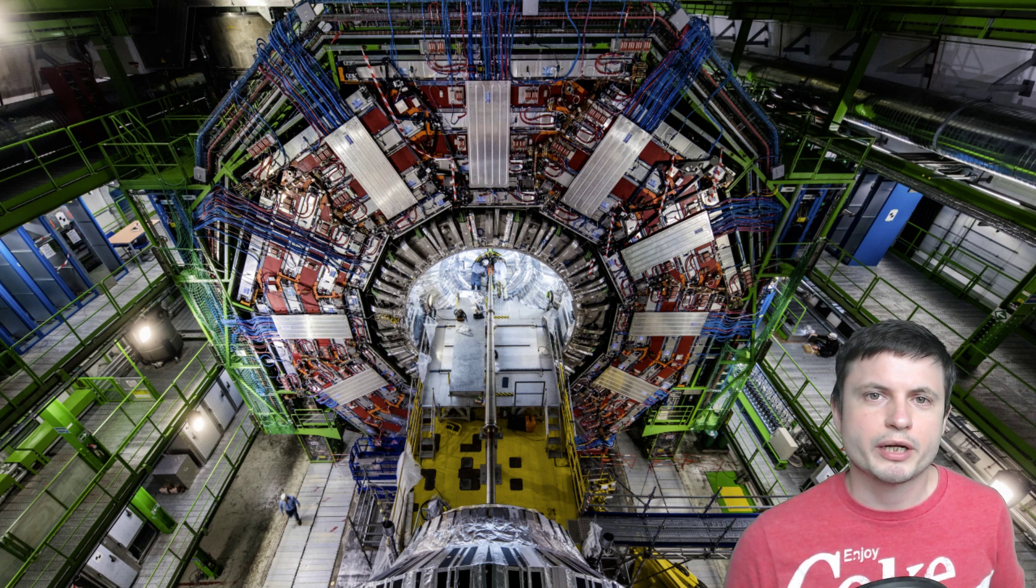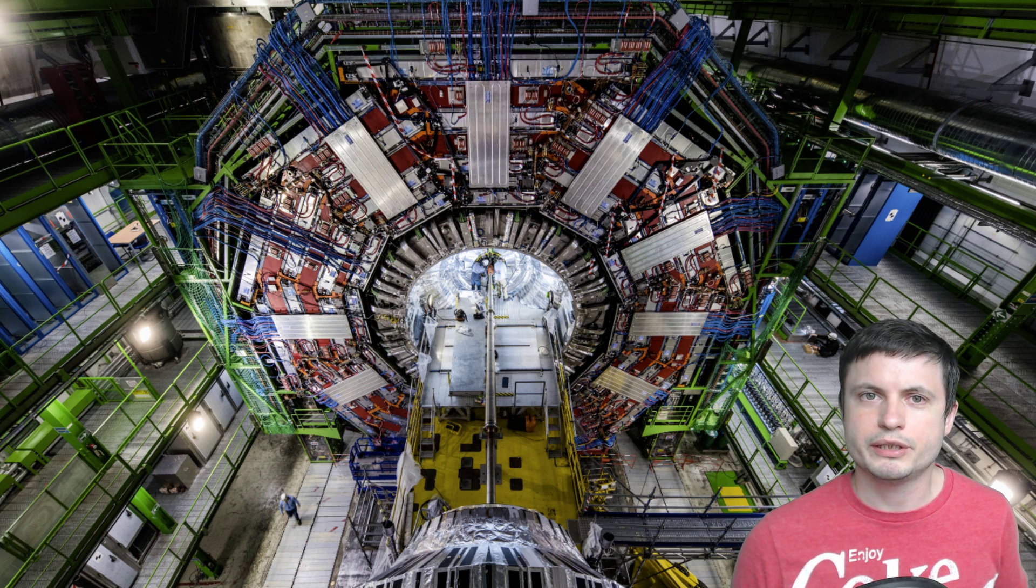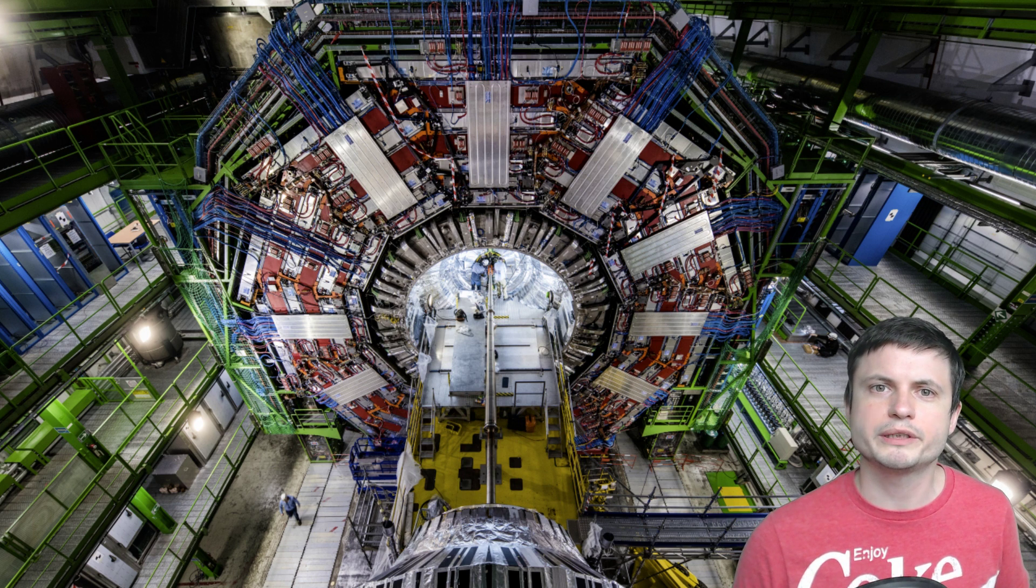And today, most of the dark matter studies focus on three main ways of detecting it. Either by directly trying to create dark matter using the so-called colliders, basically these really large facilities that try to collide particles at really high velocities, or by looking at various effects that dark matter has on regular matter. But then there is a third way, and that's of course related to the particles that might be produced after the interaction with dark matter.